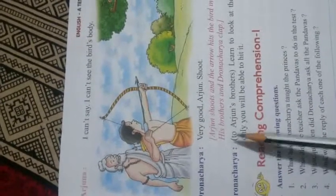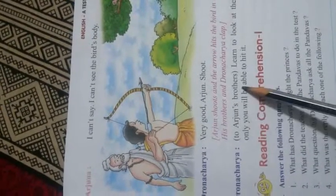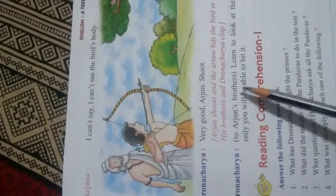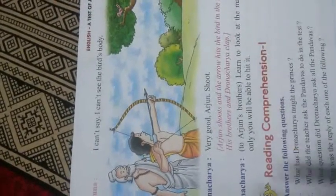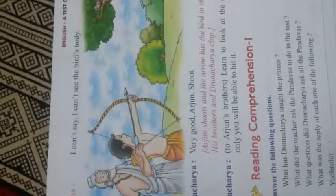The teacher tells the other four — Yudhishtar, Nakul, Sahadev, and Bhim — to learn from this. He says: 'You have to learn to look at the mark, then only you will be able to hit it. Look at the point where you have to hit, then only you will be able to succeed. Otherwise, you will not be able to do this.'